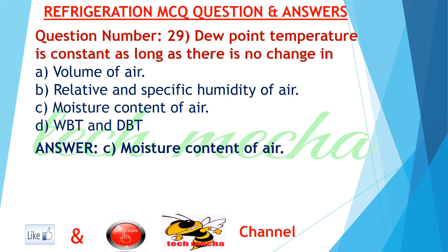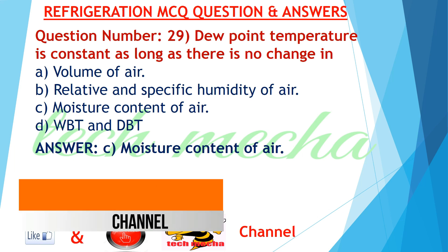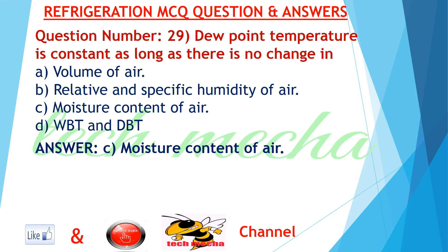Question number 29: Dew point temperature is constant as long as there is no change in A. volume of air, B. relative and specific humidity of air, C. moisture content of air, D. WBT and DBT. Answer: C. moisture content of air.